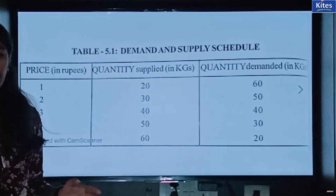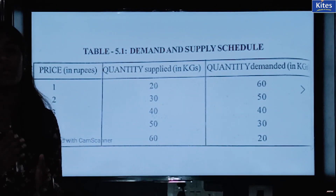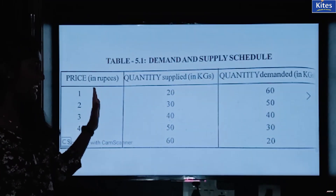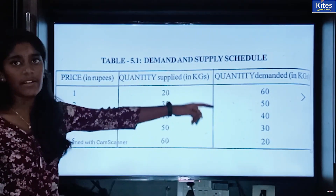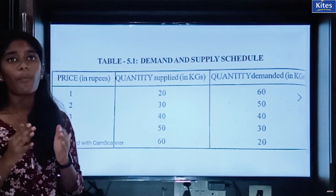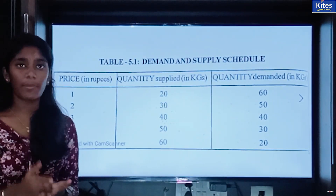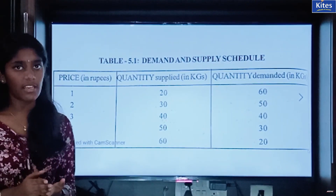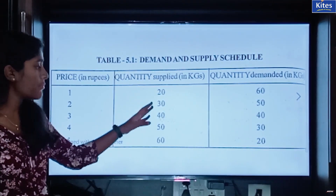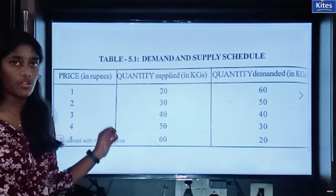The price and demand have an inverse relationship: when price increases there will be a decrease in demand, and when price decreases there will be an increase in demand. You can observe that when the price increases from 1 to 5, your quantity demanded decreases. There is also a positive or direct relationship between price and supply: when your price increases, supply also increases. You can see that when your price increases from 1 to 5, your supply also increases from 20 to 60.